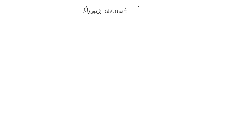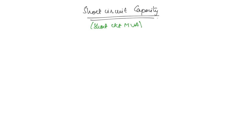Short circuit capacity — in order to be able to choose the correct circuit breaker of the right ratings, and even the size and dimensions of the bus bar, we need to find out the short circuit capacity, also called the short circuit MVA. This is represented as SCC, short circuit capacity.